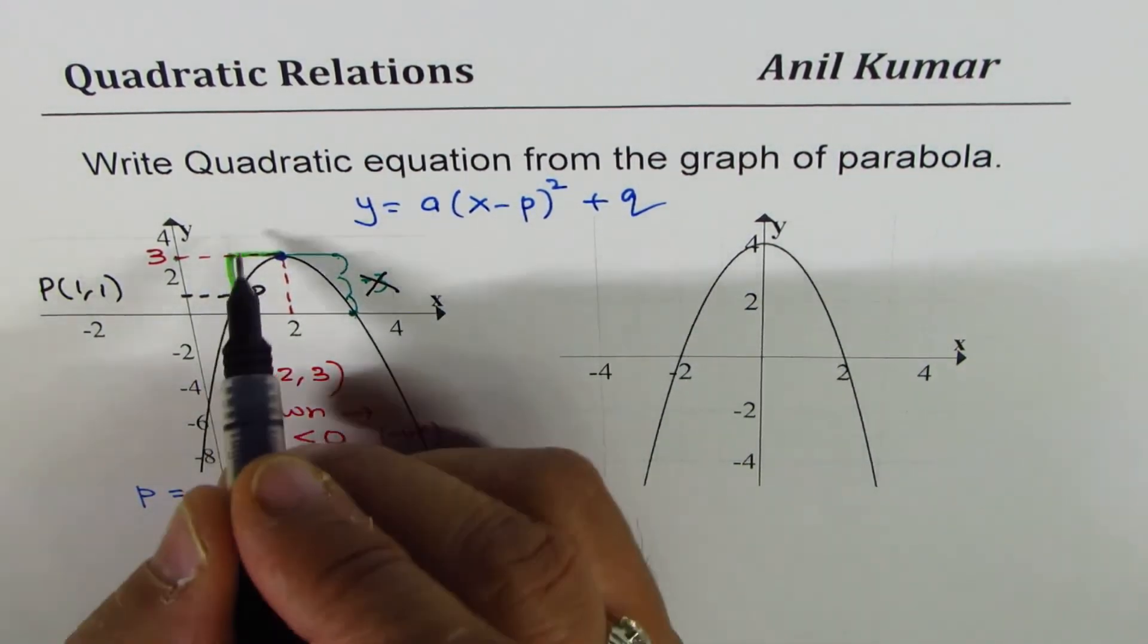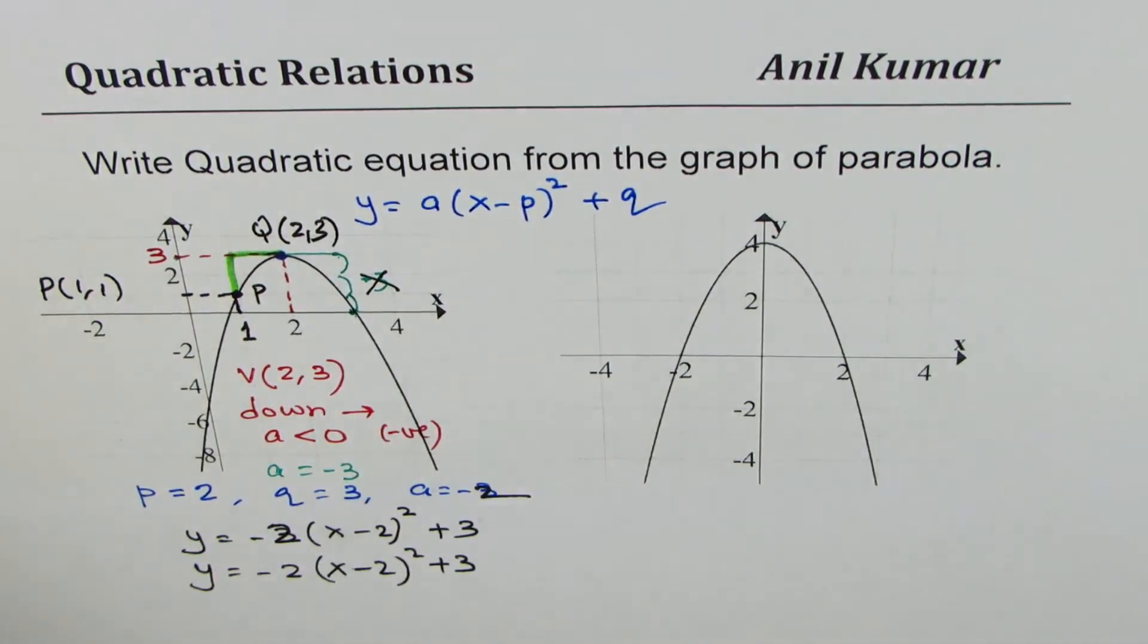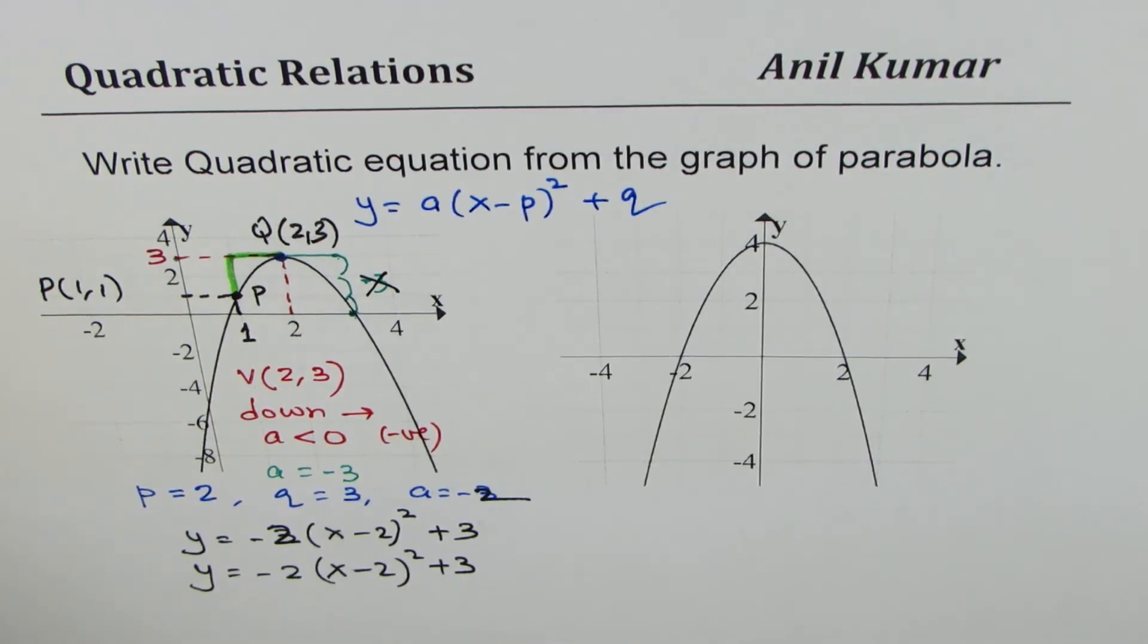So we have considered P and Q the vertex, which is 2, 3, to get to our equation. Y equals to minus 2 x minus 2 whole square plus 3.